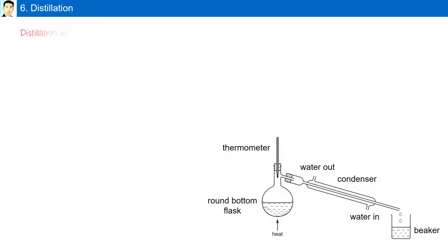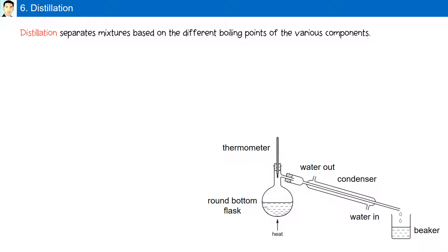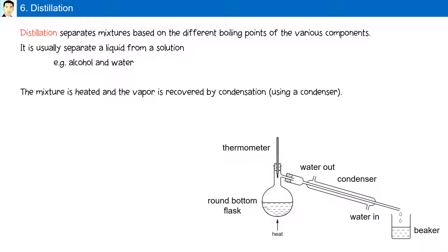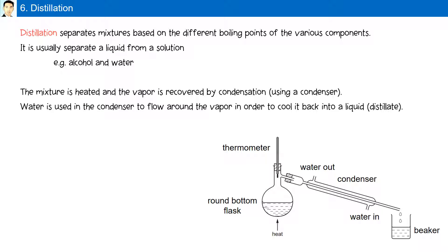Distillation separates mixtures based on the different boiling points of the various components. It is usually used to separate a liquid from a solution — for example, alcohol and water. The mixture is heated and the vapor is recovered by condensation using a condenser. Water flows around the vapor in the condenser to cool it back into a liquid. The physical property used to separate components using distillation is boiling point.